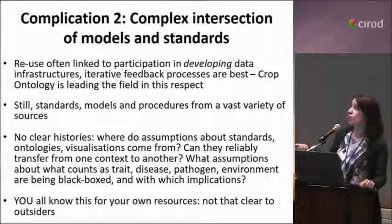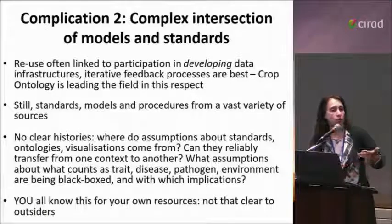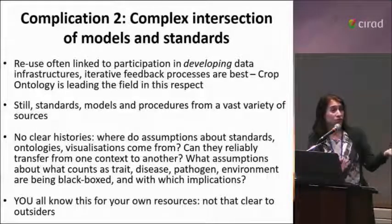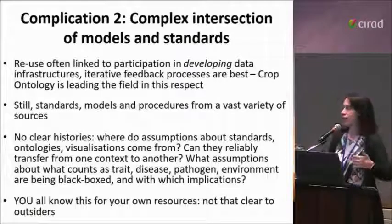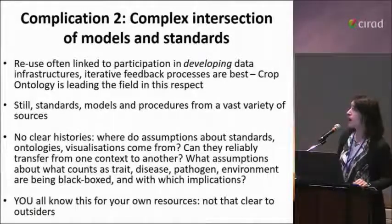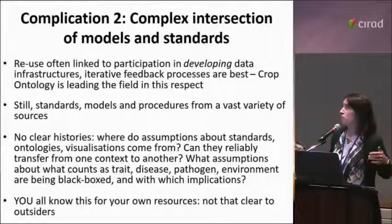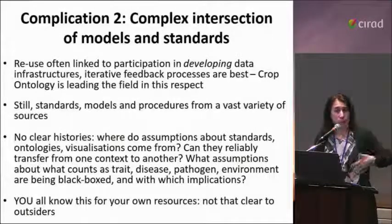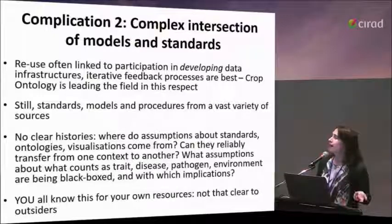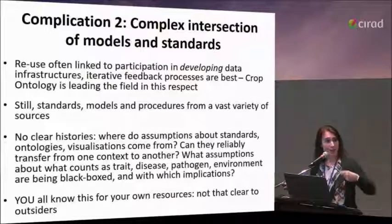At the same time, there still is confusion around the fact that there are lots of standards around lots of different models and procedures being proposed that feed into ontologies, and it's very, very difficult to track where they're coming from, what was the original motivation behind their construction, what was the conceptual framework within which they were constructed, and what it means to transfer them from one context to another. What are the theoretical and practical implications? What assumptions are being made about what counts as a trait, or disease, or pathogen, or even just the notion of environment? You have to black box unavoidably many of these terminologies to do the work you do — but then how does that get communicated to outsiders? That keeps being the big problem that we see.